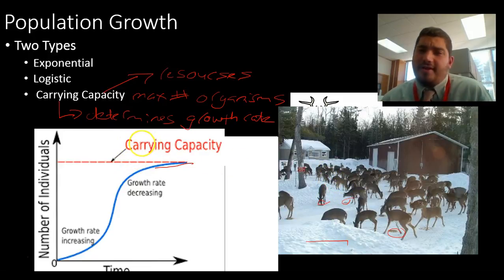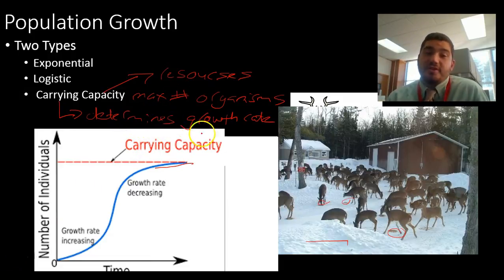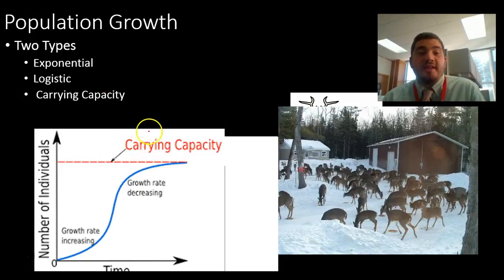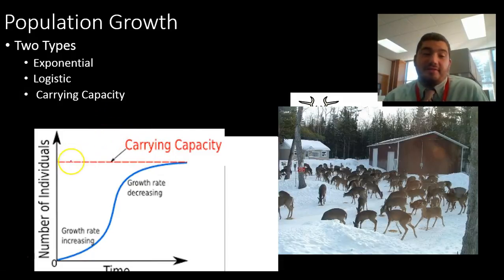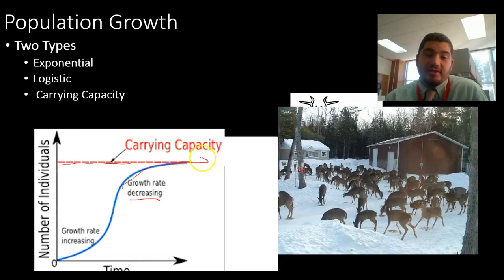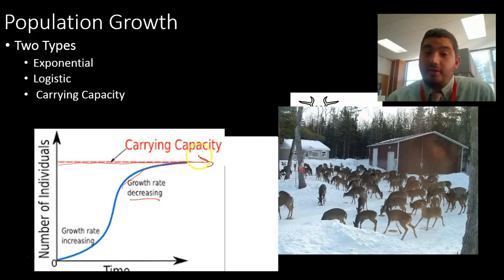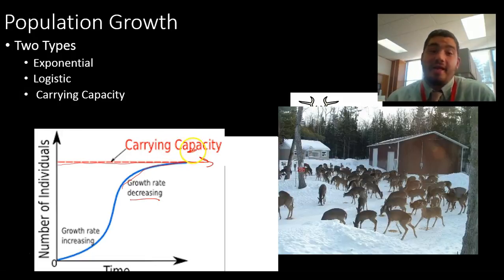The deer are going to die. The carrying capacity determines the growth rate — it determines how big a population is going to become. If the carrying capacity is at a certain level, we can only have that many organisms. The growth rate is going to slow or decrease as it reaches the carrying capacity. If a population of deer were to go above the carrying capacity, we'd actually have a negative growth rate, meaning the death rate would be higher, and it would come back down below the carrying capacity.